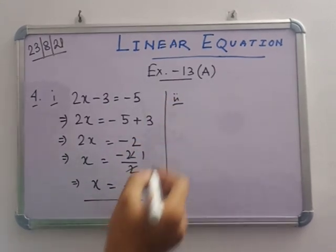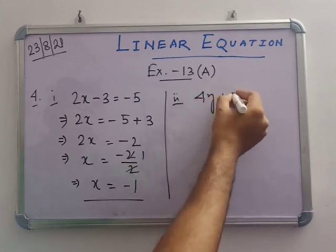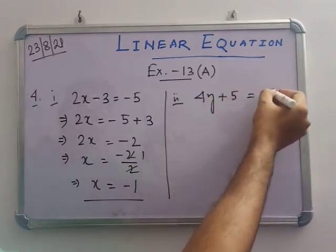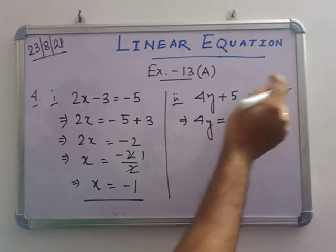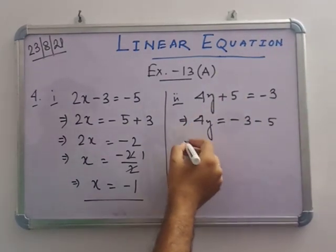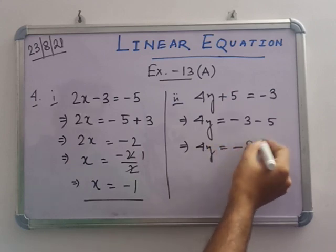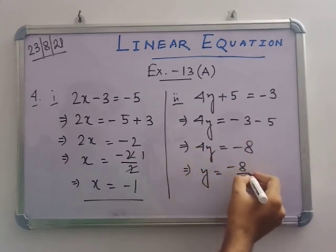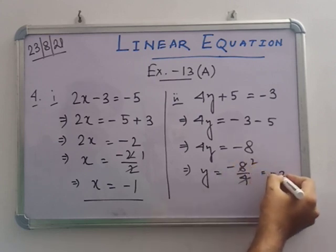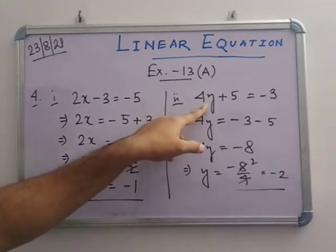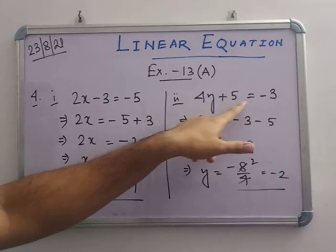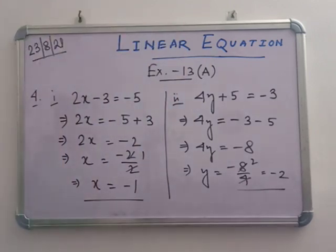Number 2: 4y plus 5 equals to minus 3. So 4y equals to minus 3 minus 5, which gives 4y equals to minus 8. Therefore y equals to minus 8 by 4, which is minus 2. Verification: 4 into minus 2 equals minus 8, and minus 8 plus 5 equals minus 3. The remaining sums are homework.